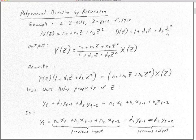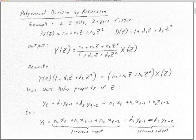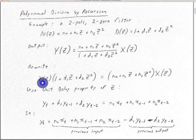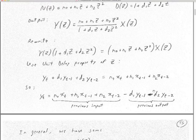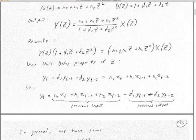So our output is this numerator polynomial divided by the denominator polynomial, multiplied by the input X polynomial. Let's rewrite it — multiply both sides by the denominator. We get the numerator polynomial acting on X and the output Y multiplied by the denominator polynomial. Using the unit delay property of Z, we distribute Y into the denominator polynomial and X into the numerator polynomial, giving us terms like Z·Y(Z), Z²·Y(Z), Z²·X, and Z·X.